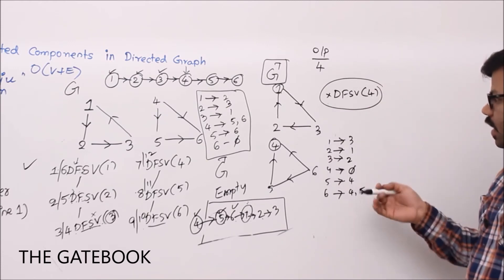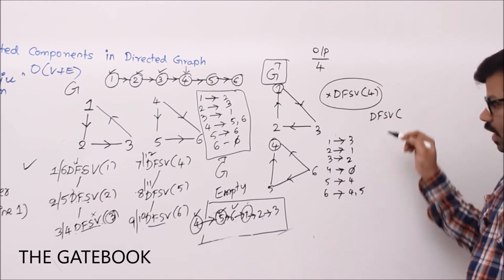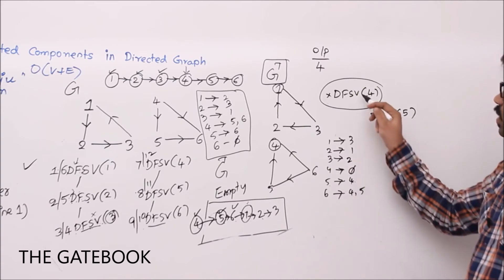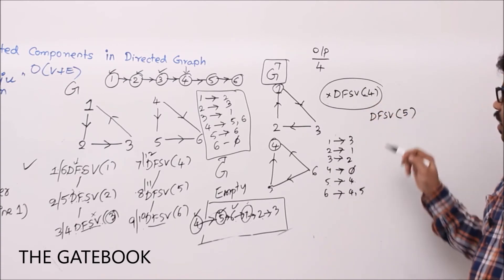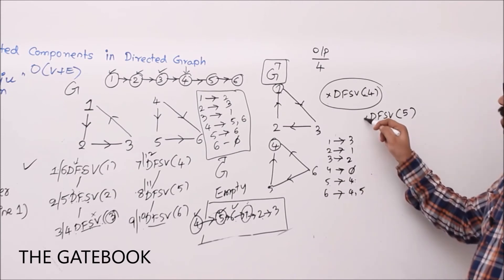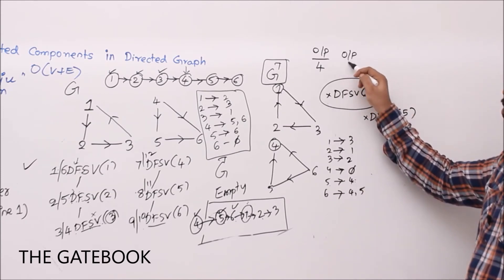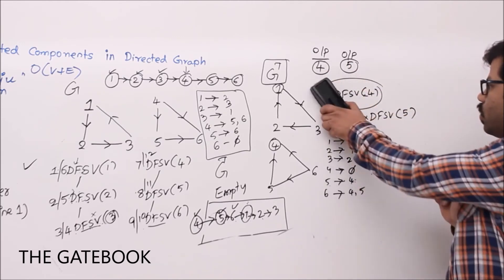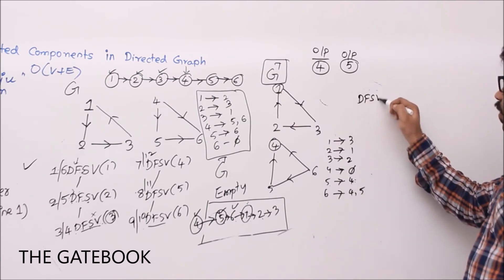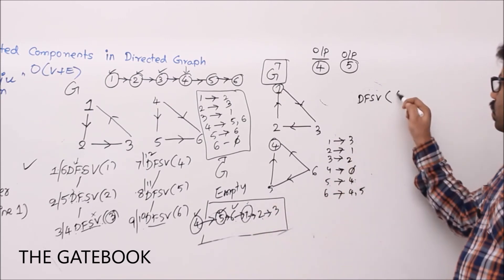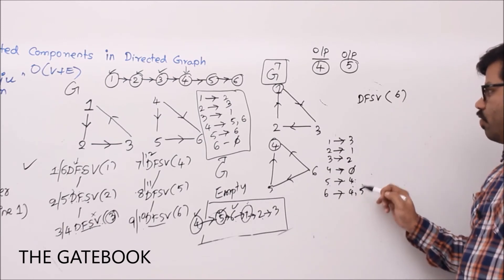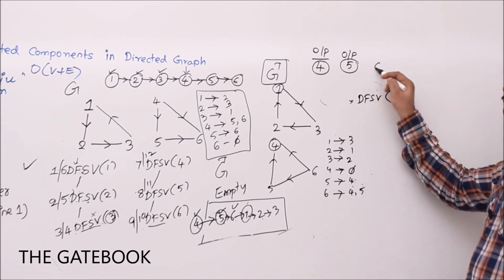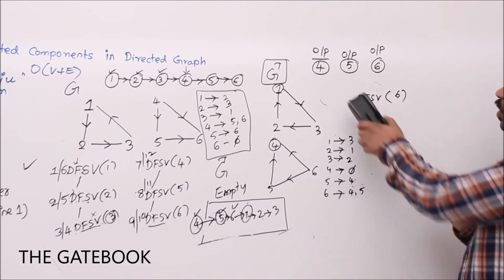Continue to the next DFS from vertex 5. Vertex 5's neighbor is 4, but 4 is already visited, and 5 has no other neighbors, so it closes immediately. Output: {5} is another component. Next, DFS from vertex 6: neighbors are 4 and 5, both already visited. So 6 closes immediately. Output: {6} is the third component.